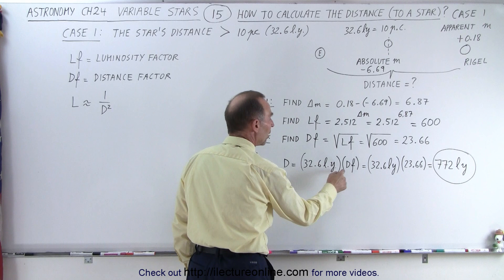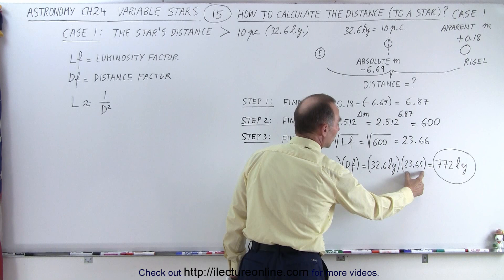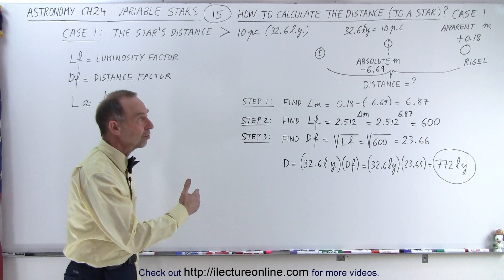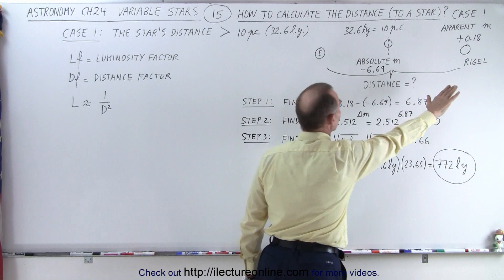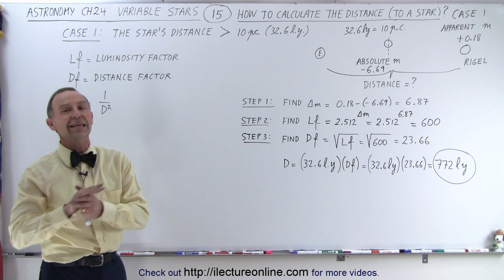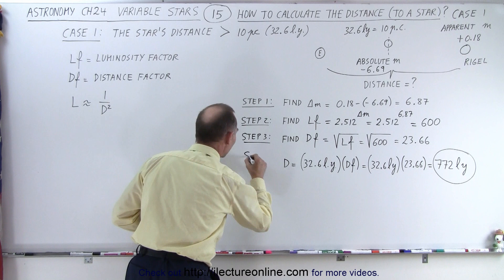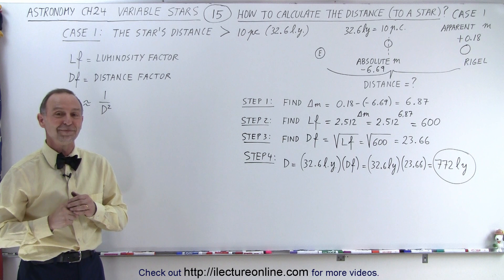And then finally, we take that standard distance of 32.6 light years, multiply it times the distance factor. So 32.6 light years multiply it times 23.66 gives us 772 light years. And that's the distance to Rigel. And we can calculate that since we now know both the absolute magnitude and the apparent magnitude. That's how we find the distance to stars that are farther than 10 parsecs away if we know both magnitudes. Those four steps will give you the right answer.